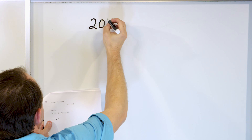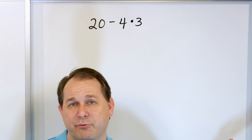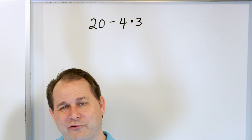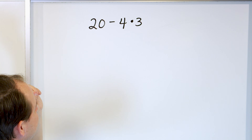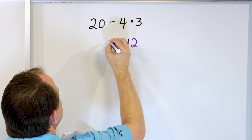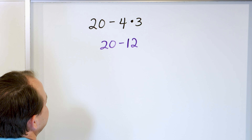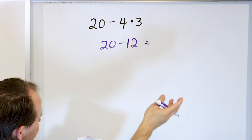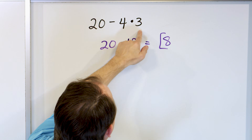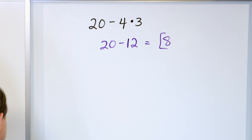Next problem: 20 minus 4 times 3. First thing: do we have parentheses? No. So the list is: parentheses, then multiply/divide, then add/subtract. We have multiplication here, so the subtraction from 20 comes last. 4 times 3 is 12. Then 20 minus 12 is 8 — and so the answer is 8. If you go left to right incorrectly and do 20 minus 4 first, you get 16, and 16 times 3 is definitely not 8. So you have to do it in the right order.